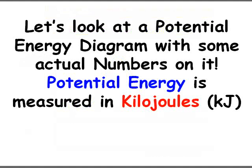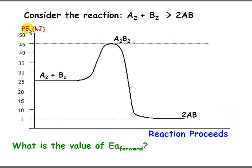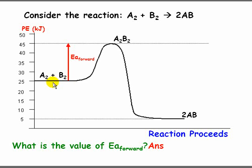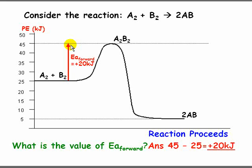Let's look at a potential energy diagram with some actual numbers on it. Potential energy, like all energy, can be measured in kilojoules. The potential energy axis on the diagram is in kilojoules. For Ea forward, it goes from 25 up to 45 on the graph. So the answer is 45 minus 25, which is positive 20 kilojoules. We can also see it's positive by noting that the arrow goes up.